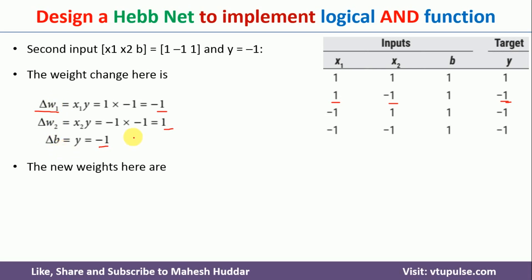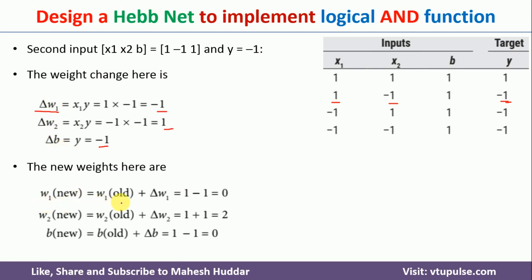Now we calculate the new weights. W1(new) = W1(old) + ΔW1 = 1 + (-1) = 0. W2(new) = W2(old) + ΔW2 = 1 + 1 = 2. B(new) = B(old) + ΔB = 1 + (-1) = 0. This is how we calculated the new weights after the second example.